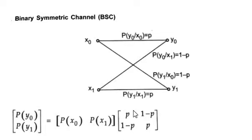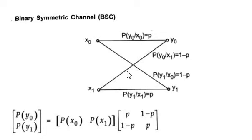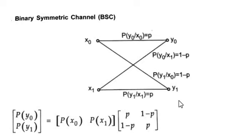So this is our transition probability matrix. If you want to find P(Y), P(Y0) — as we saw in the previous case — it is just matrix multiplication. The probability of P(Y1) will be equal to P(X0) times the probability plus P(X1) times this probability. Then probability of P(Y1) equals P(X0) times P(Y1|X0) plus P(X1) times P(Y1|X1). So this is how we define the binary symmetrical channel.